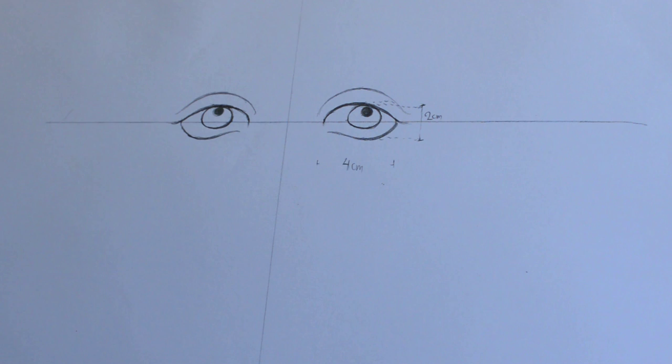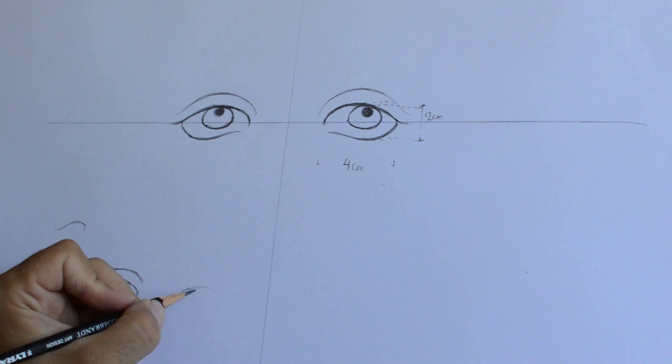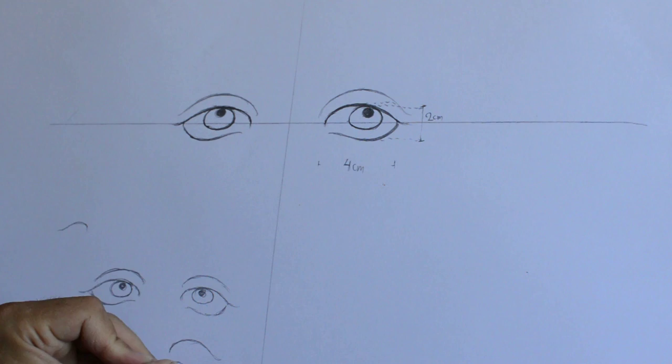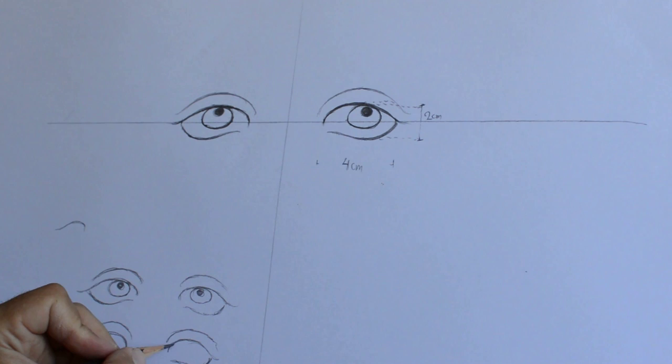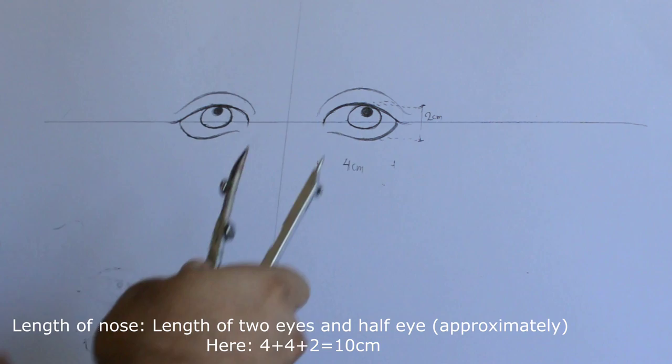Now make sure that when you paint the irises they shouldn't be as if they are cross-looking one to the other, or that you don't paint the pupil in the middle of the iris. These are some common mistakes that beginner iconographers do.